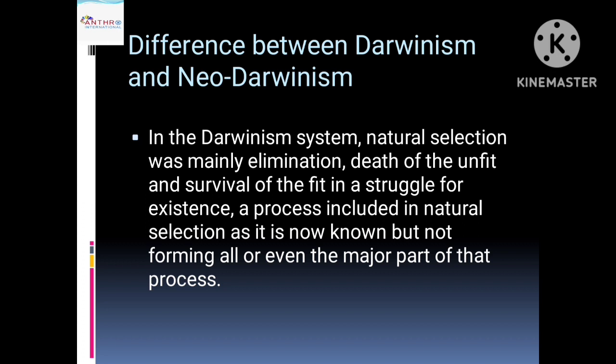In Darwinism, natural selection was mainly elimination — the unfit are eliminated and the fit survive in the struggle for existence. This is natural selection as Darwin knew it, but it does not form all, or even the major part, of the process. Darwin could only explain elimination; he could not explain what mechanism was behind the new traits arising within a species — and that mechanism has been fully explained in Neo-Darwinism.